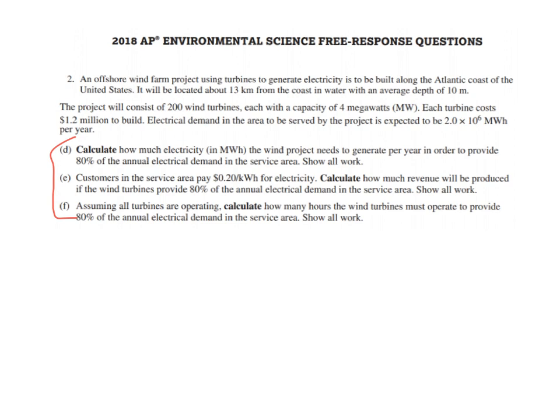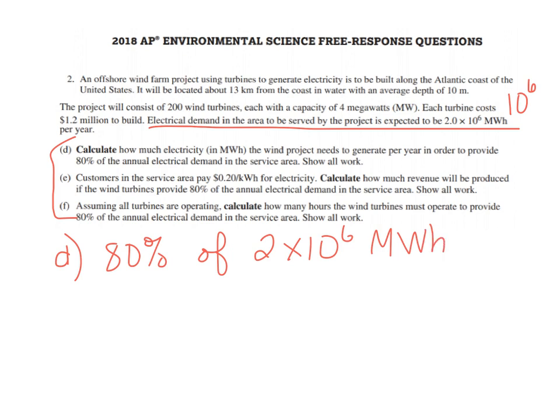The math question will not be entirely math, it will be only about half math. Letter D on this paper: calculate how much electricity in megawatt hours the wind project needs to generate per year in order to provide 80% of the electrical demand. It says that the electrical demand up here is expected to be 2 million megawatt hours. One of the things you need to make sure you know is that a million is 10 to the 6. So, 80% of 2 million megawatt hours, we have 80% of 2 times 10 to the 6 megawatt hours. Always put your units in your work. It's extremely important, do not forget units in your work.